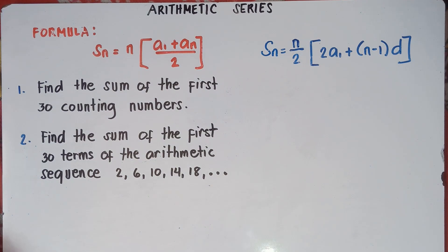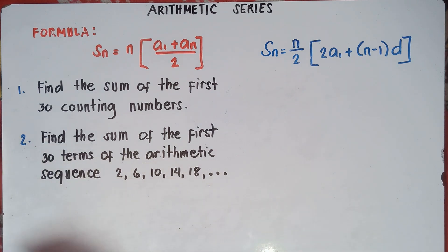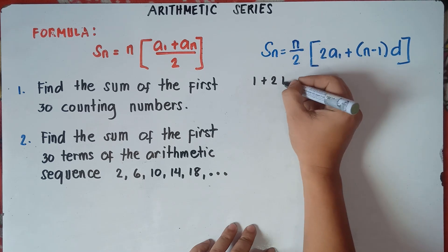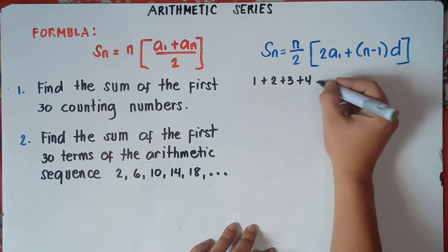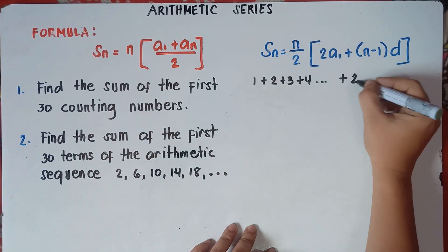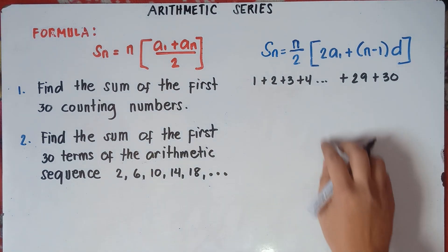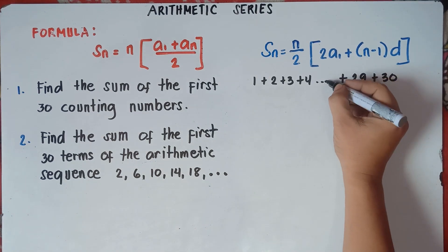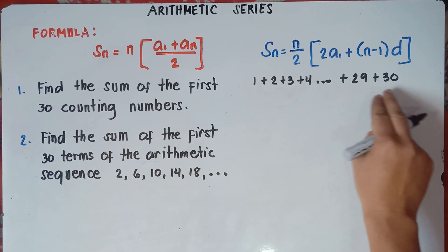Alright, so let's answer number 1: find the sum of the first 30 counting numbers. Of course, we will need to write the numbers. So we have 1 plus 2 plus 3 plus 4, and so on, plus 29 and then plus 30. So 1 plus 2 plus 3 plus 4 plus 5 plus 6, and so on up to 29 and 30.